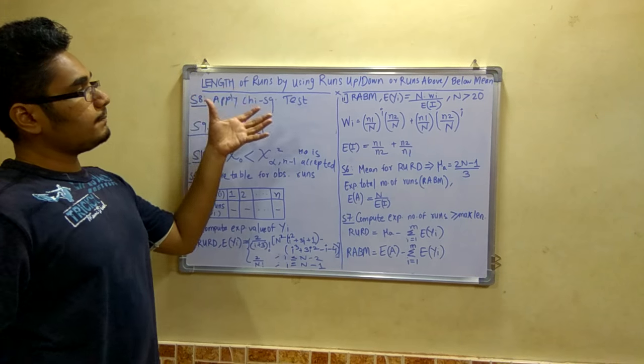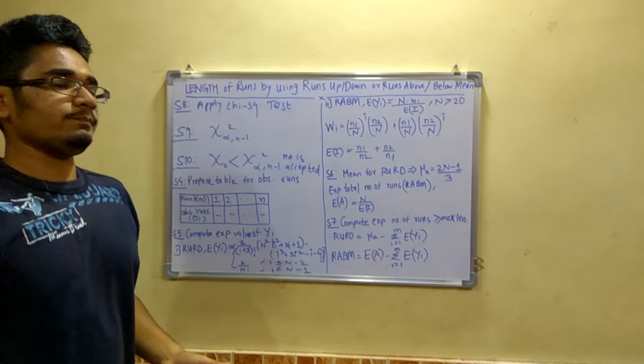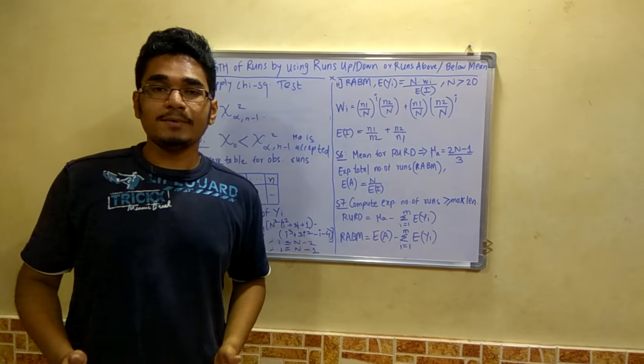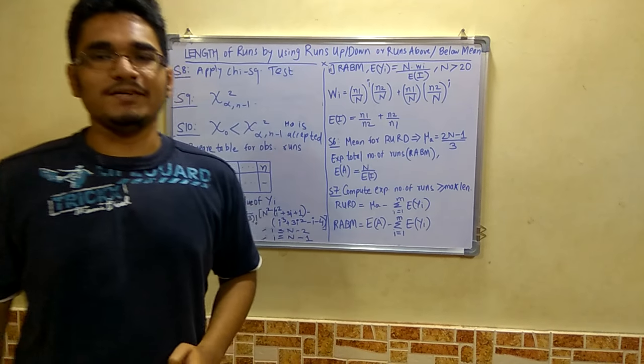So this is the algorithm in total of length of runs by using runs above or below as well as runs up or down. Hope you enjoyed this video. If you found this video helpful please hit the like button and if you haven't subscribed to my channel please subscribe. Thanks for watching this video.